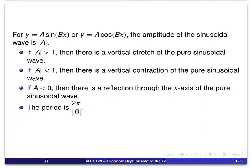And if the absolute value of a is less than 1, it's just a compression or a contraction of the so-called pure sinusoidal wave or the standard sinusoidal wave. The period of the function is 2 pi divided by the absolute value of b, or for our situations, 2 pi over b.